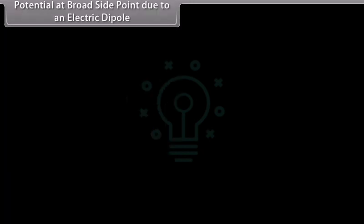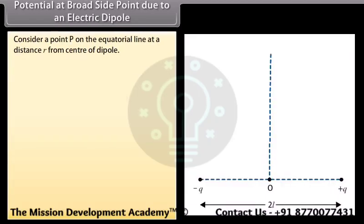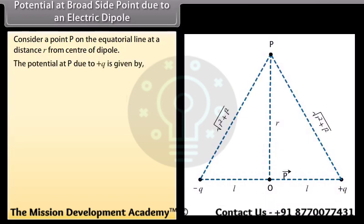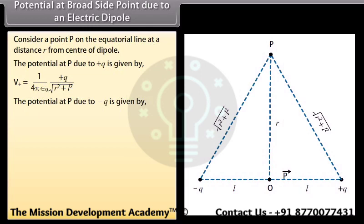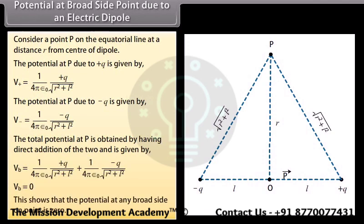Potential at a broadside point due to an electric dipole: Consider a point P on the equatorial line at distance R from the center of the dipole. The potential due to +Q is V₊ = (1/4πε₀) × Q/√(R²+L²), and due to −Q is V₋ = (1/4πε₀) × (−Q)/√(R²+L²). The total potential V_B equals 0. This shows that the potential at any broadside-on point is zero.